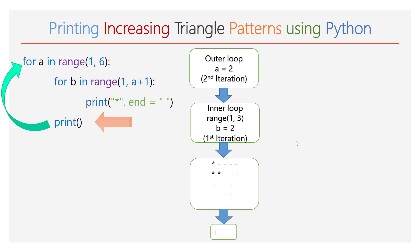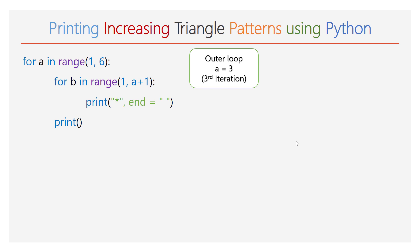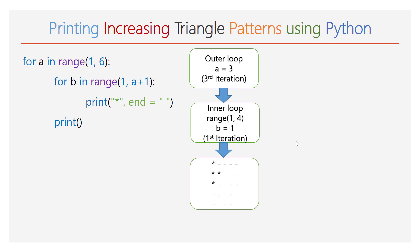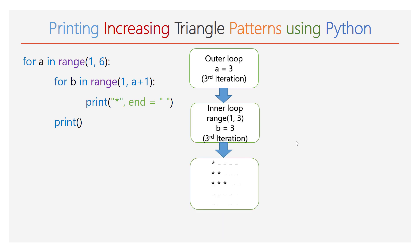Again, the value of a will be incremented by 1 — now the value of a will be 3. The range of b will be 1 to 4, and the inner for loop will iterate for 3 times. During each iteration, 1 star will be printed. At the end of the inner for loop, 3 stars will be printed in the third line. Next, an empty print function will be executed and the cursor will enter a new line.